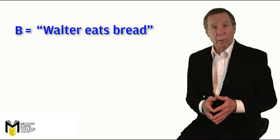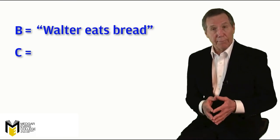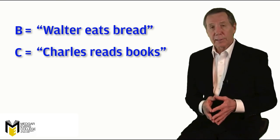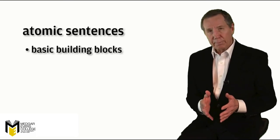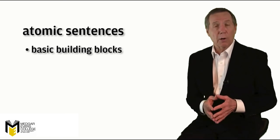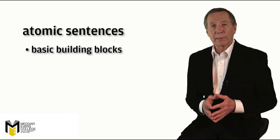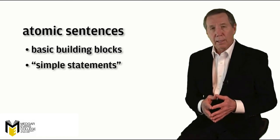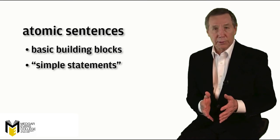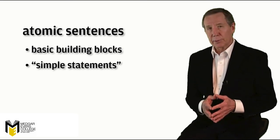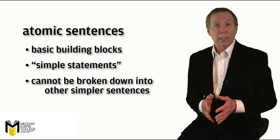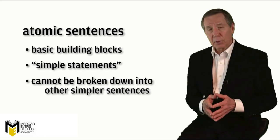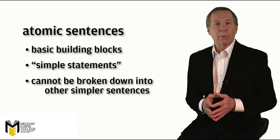Let the letter B stand for 'Walter eats bread,' and let the letter C stand for 'Charles reads books.' In sentential logic, the individual sentence letters such as A, B, and C are called atomic sentences because they're the basic building blocks out of which more complex structures are made. In some logic texts, atomic sentences are called simple statements. An atomic sentence is one that cannot be broken into smaller parts that are themselves sentences, so the word 'atomic' indicates that these are the smallest units of sentential logic that we need to consider.